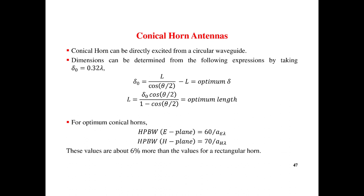Similarly, for conical horn, the value of delta and L: L by theta by 2 equals delta naught cos theta by 2 into 1 minus cos theta by 2. Half-power beam width equal to 60 by AE delta. And half-power H-plane equal to 70 by AH.